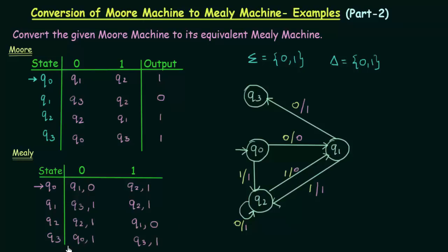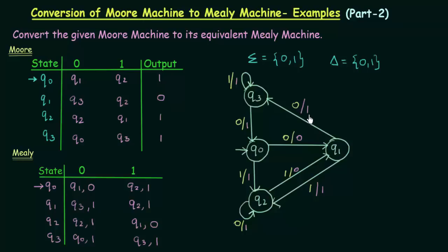Now coming to Q3. Q3 on input 0, where does it go? It goes to Q2. Q3 will go to Q2 on input 0, and the output it gives is 1. And Q3 on input 1, where does it go? It goes to Q3 itself, and the output that it gives is also 1. Here we have drawn the transition diagram for the Mealy machine. The first value written is the input and the second value is the output. I hope this was clear to you. Thank you for watching and see you in the next one.